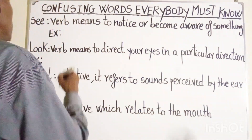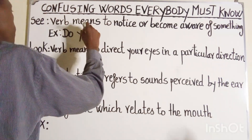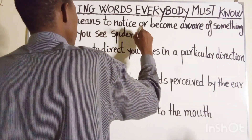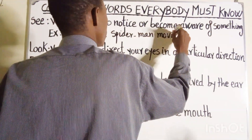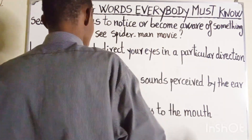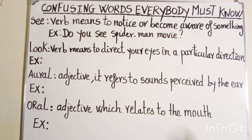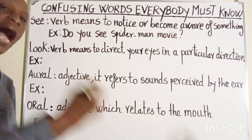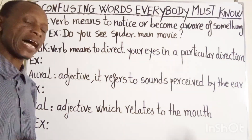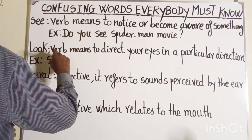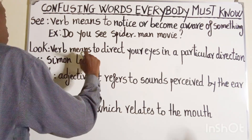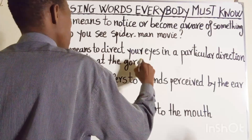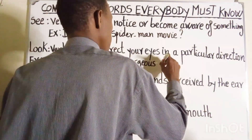Let's get an example: 'Do you see a Spider-Man movie?' The next word is 'look', which is also a verb and it means to direct your eyes in a particular direction. Let's get an example as well: 'Simon looks at the gorgeous garden.'